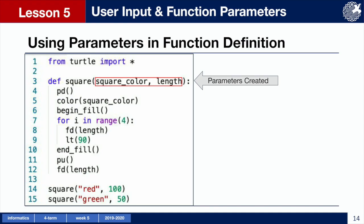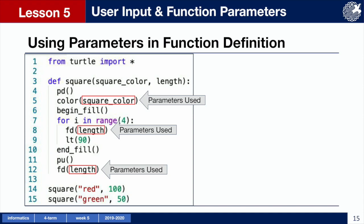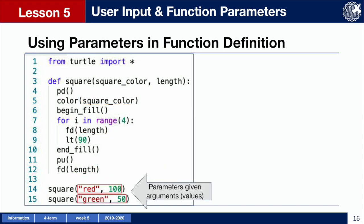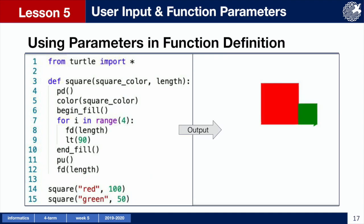The parameters are created between the parentheses after the function name, and are then used throughout the function to control the color and length of the square and the distance the turtle moves forward after drawing. In our function call, we have provided two arguments: red for squareColor and 100 for length. The turtle reads the arguments in order and assigns them to the parameters in the same order. Then the same function is called again with green for squareColor and 50 for length. When we run this code, we get the expected output — all in just 15 lines of code.